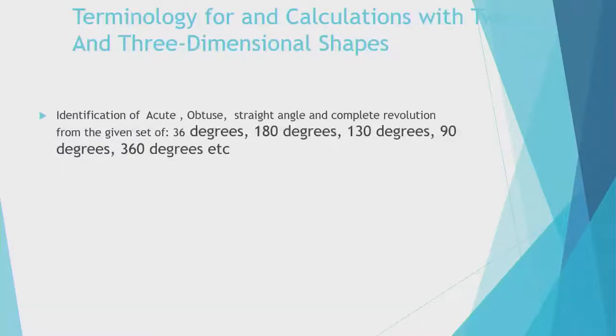The terminology for calculations with two and three dimensional shapes. You have to pay attention here. Identify what is an acute, obtuse, straight line, straight angle, and complete revolution from a given set of 36 degrees, 180 degrees, 130 degrees, 90 degrees, 360 degrees etc.